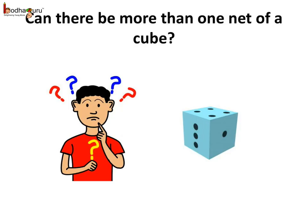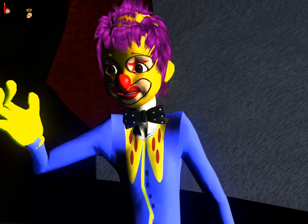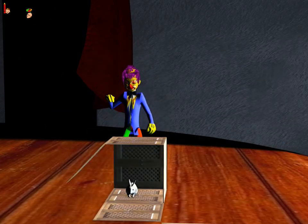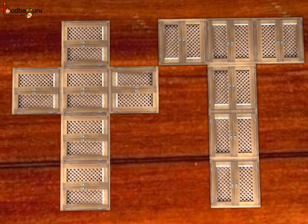Does it mean there can be only one net of a solid figure? Can there be more than one net of a solid? Yes, it is very much possible. Remember, when the joker folded this shape, it became a cube box, so it is a net of a cube too. A 3D shape may have many different nets. During the magic show, Vikral and the joker made a cube out of two different nets. In these two nets of the cube, the arrangement of faces is very different, but both contain 6 square surfaces as the cube has 6 square faces.